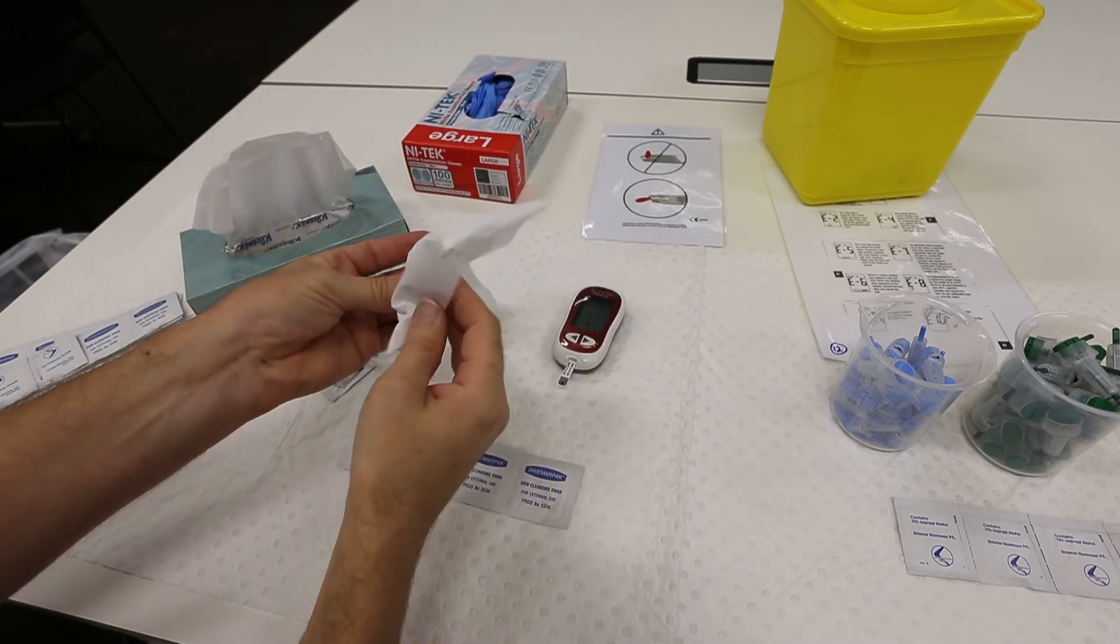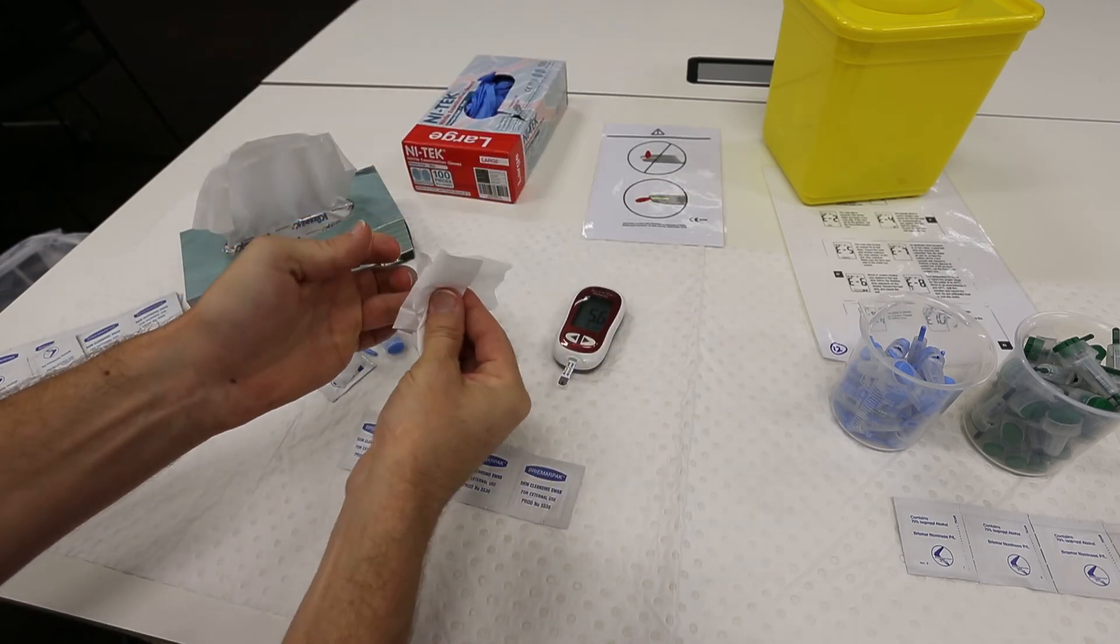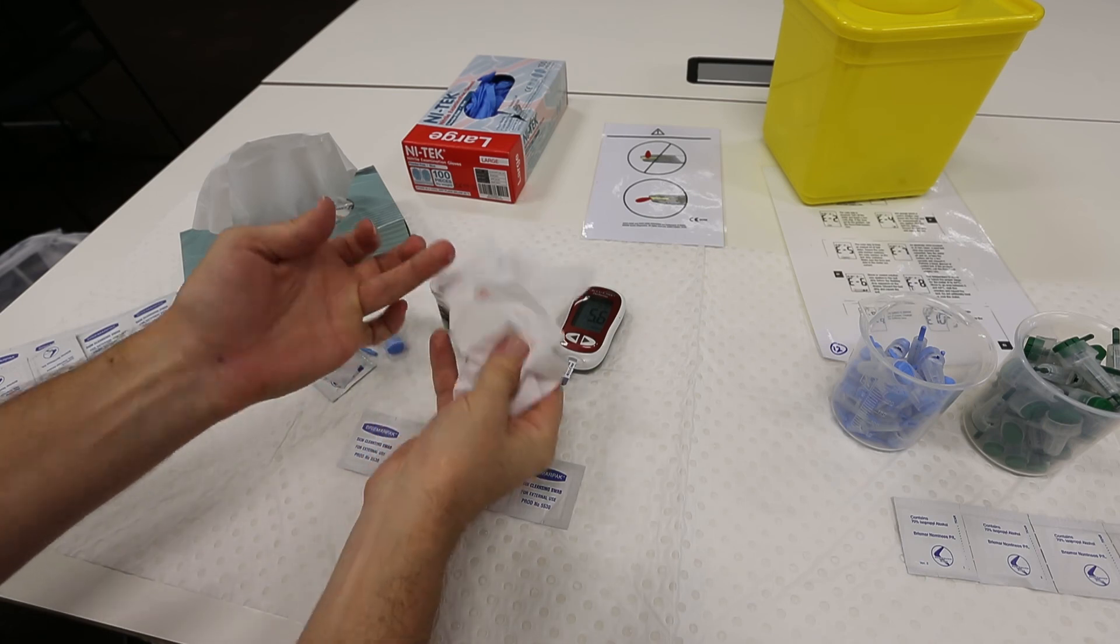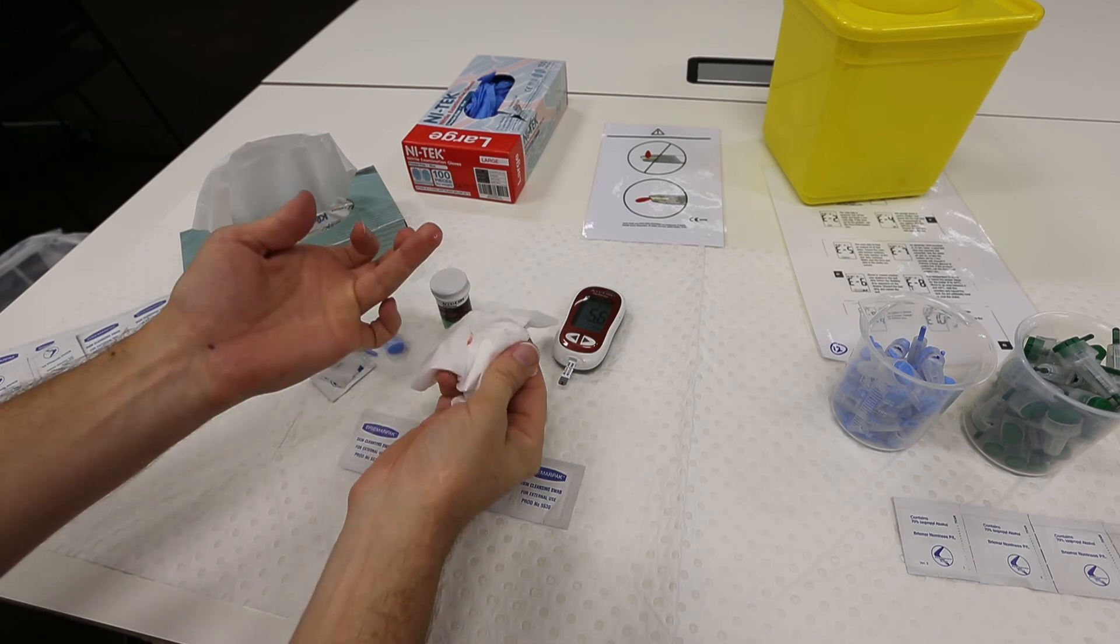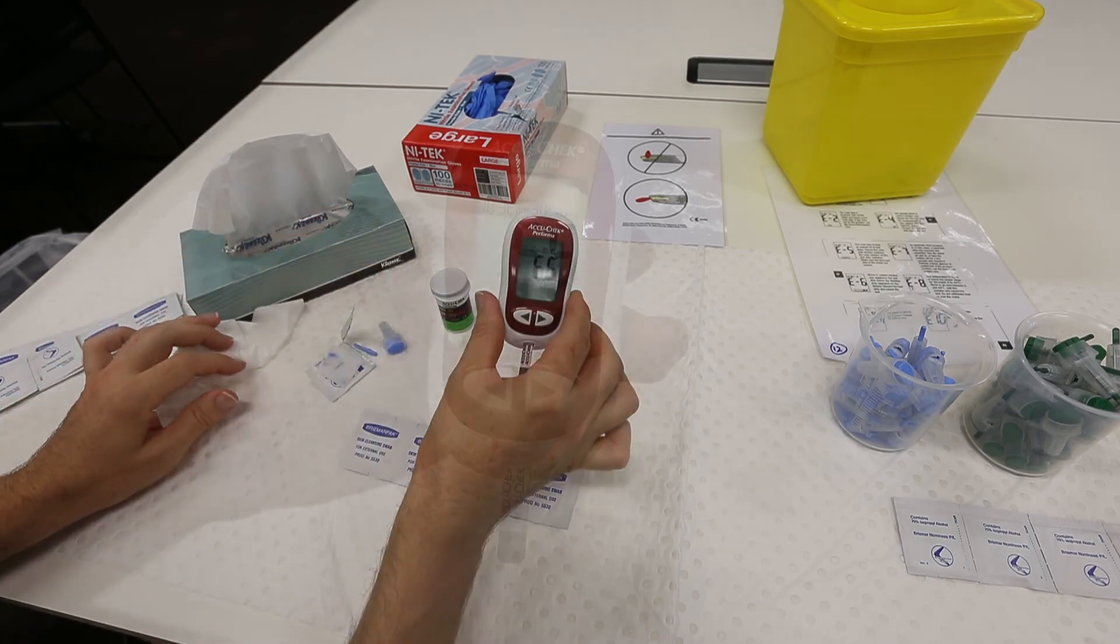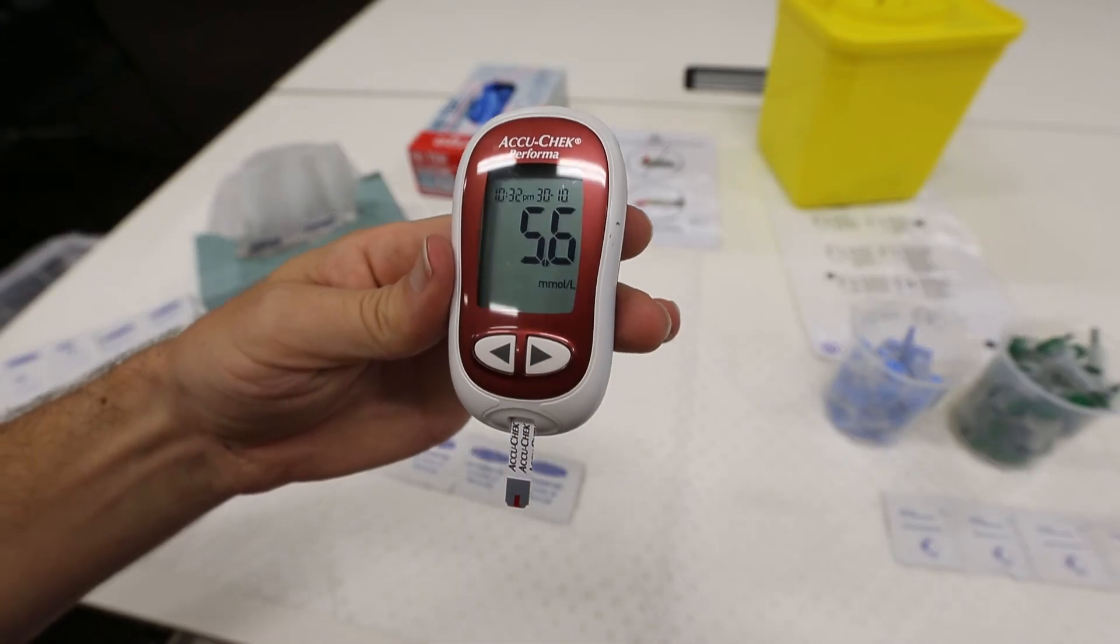Once that is done, place the glucose test meter onto the table and take a tissue and dab the remaining blood from your finger. The glucose concentration in millimoles per liter should now be displayed on the screen of your test unit.